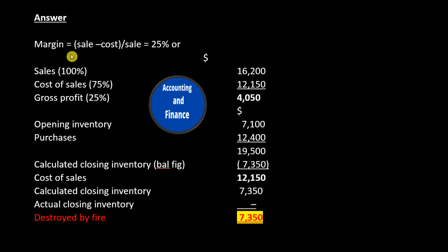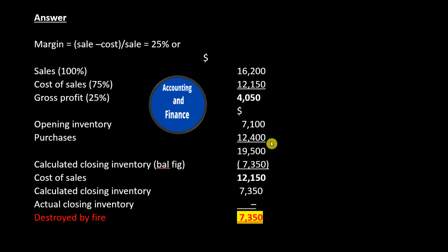Answer. Margin equals sales minus cost divided by sales equals 25%. Sales 100%, $16,200. Cost of sales 75%, $12,150. Gross profit $4,050. Opening inventory $7,100. Purchases $12,400. Total $19,500.